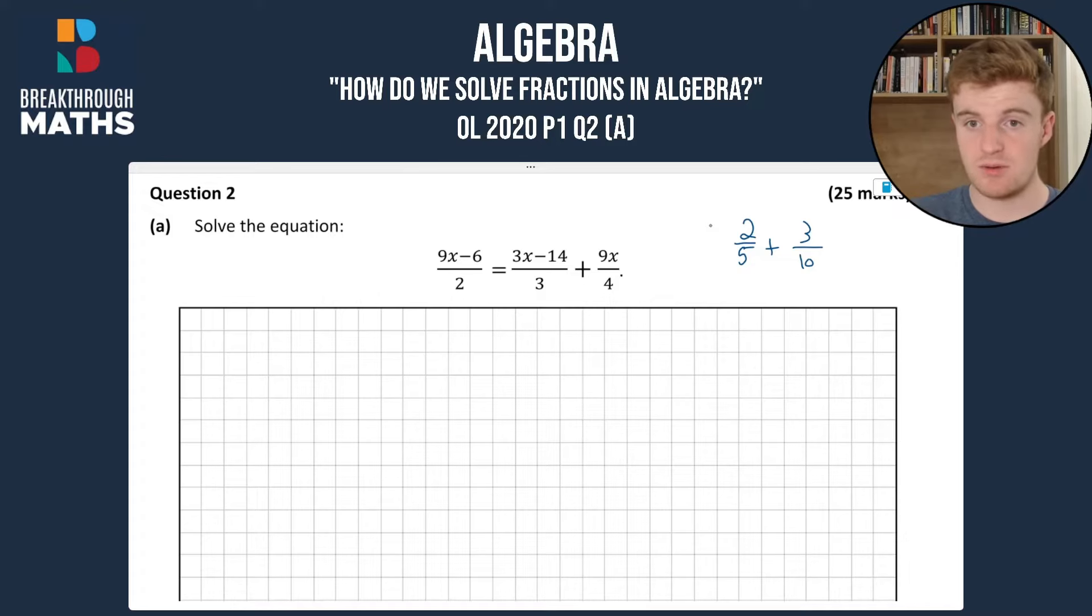So we can multiply the 2 over 5 by 2 over 2, which is just 1, so we're keeping it the same value. That would give us 4 over 10 plus 3 over 10, and then we can add them to get 7 over 10. So the same concept applies here.